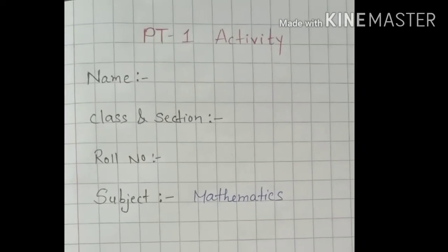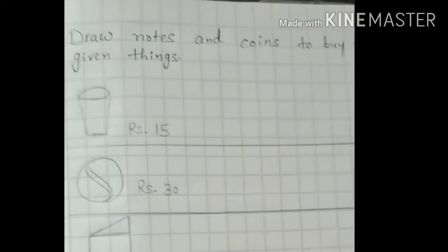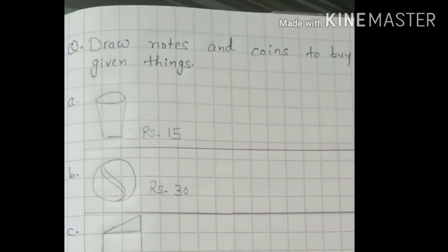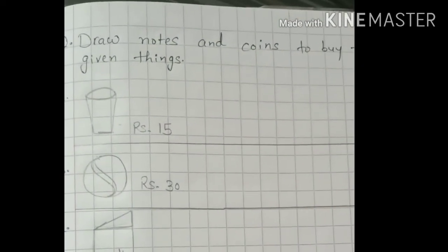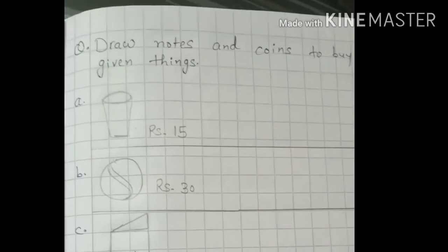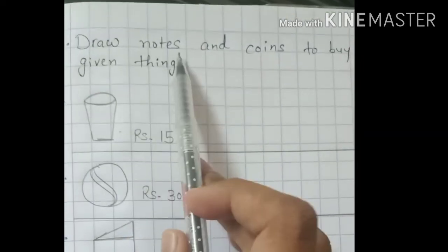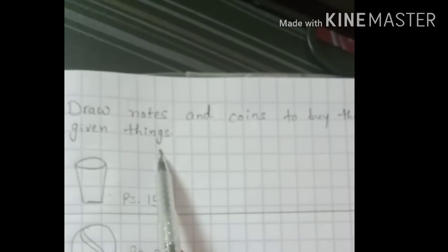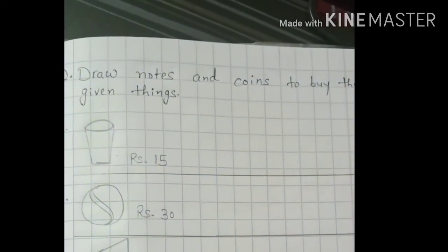After completing the first page, on the second page you will write the question. You will get this question along with your syllabus. The question is: Draw notes and coins to buy the given things.